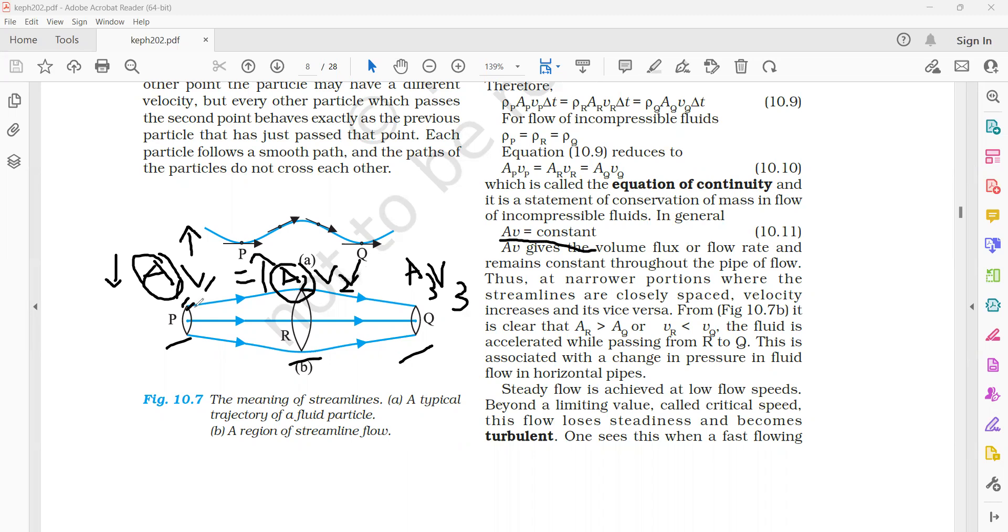So whenever this narrow portion is there here, the flow of the fluid, the velocity is high, velocity is more compared to this point R. This makes the equation of continuity work. So irrespective of the changes in the area, the velocity of the fluid also changes in such a way that to make the area into velocity of the fluid remain constant.